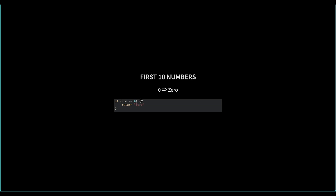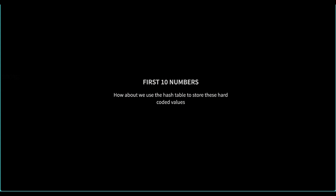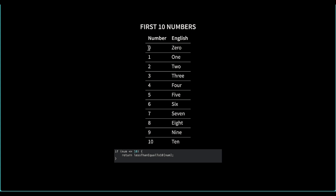The first number we see is zero, and the corresponding English word is 'zero', so we check it in an if condition and return the hard-coded string. Similarly for one, two, three, four — we return each hard-coded value. Instead of having so many if conditions, we can use a hash table where the number is the key and the corresponding string is the value. We build the map up to 10, because that is where the pattern holds.